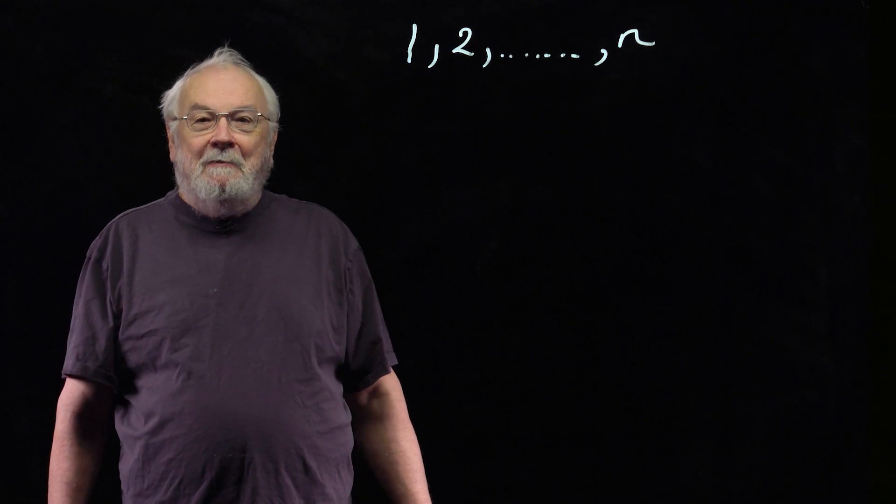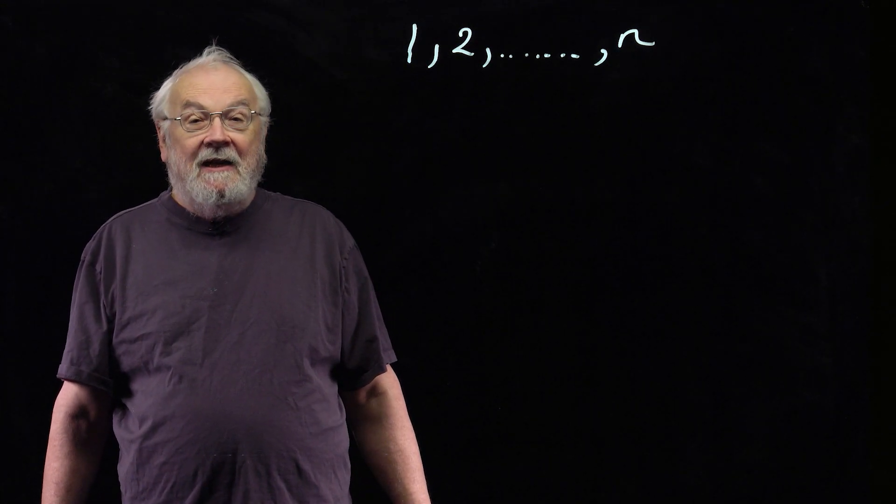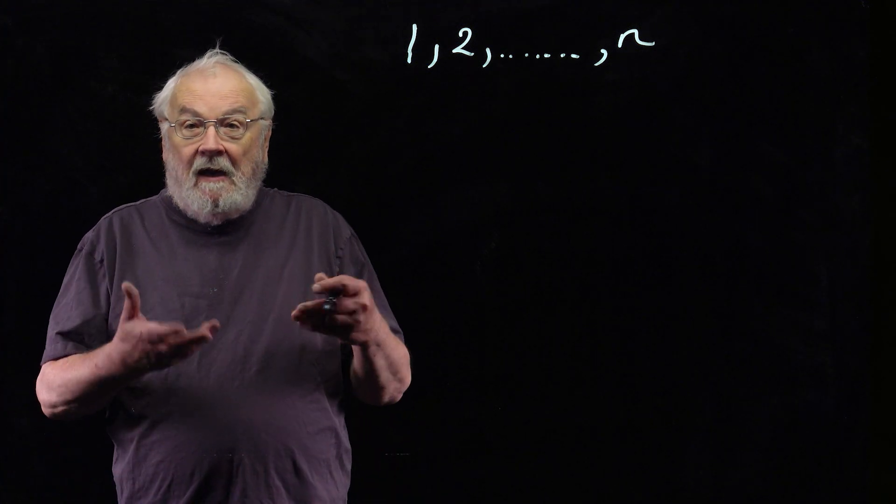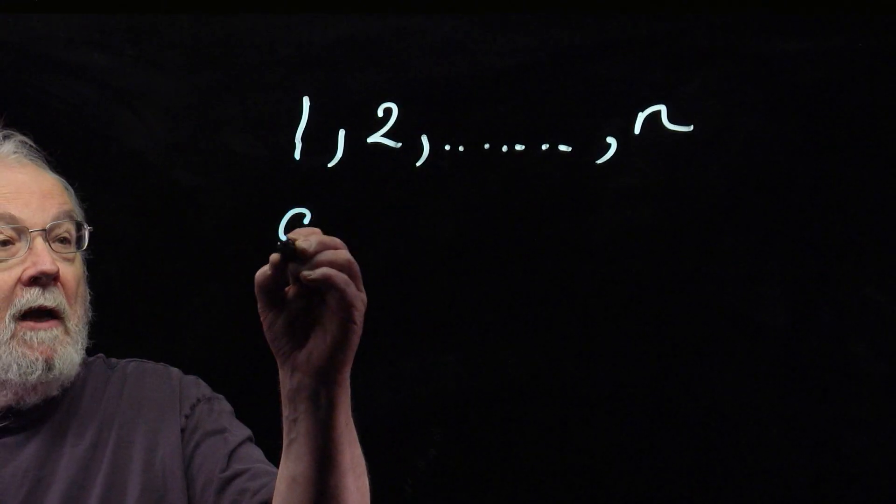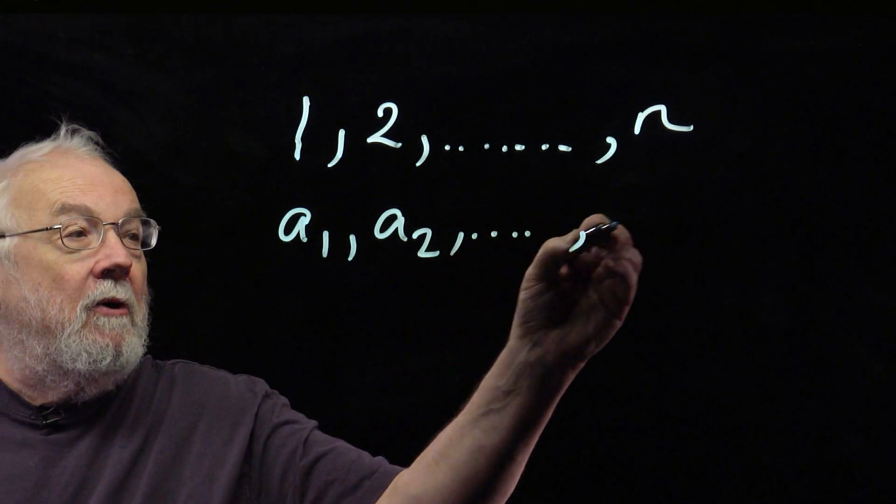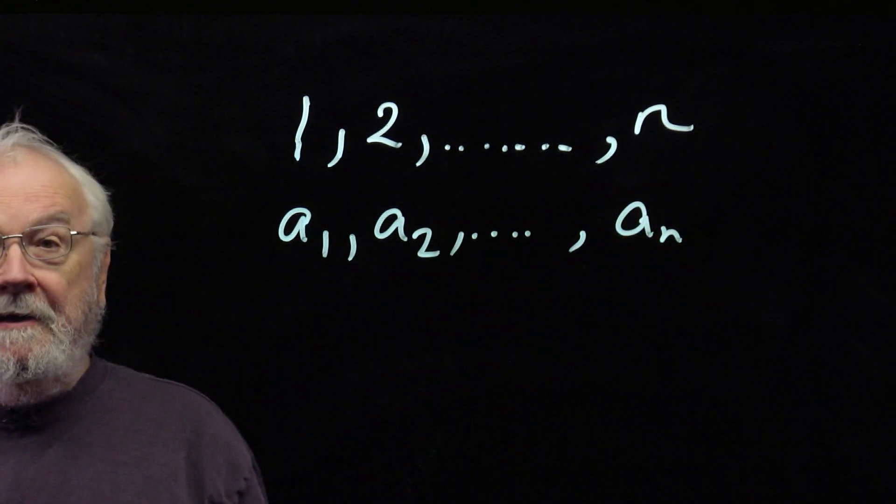This question is about the magician, and the magician has the numbers from 1 up to n written on n cards in some order. So let's say the top card is a₁, the second card is a₂, and so on, and the last card is aₙ.